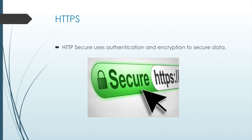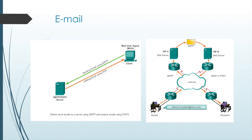Email is a stored-and-forward method of sending, storing, and retrieving electronic messages across networks. Email messages are stored in databases on mail servers. Email supports three separate protocols for operation: Simple Mail Transfer Protocol or SMTP, Post Office Protocol or POP, and Internet Message Access Protocol or IMAP. The application layer process that sends mail uses SMTP, while a client retrieving email uses one of two application layer protocols: POP or IMAP.